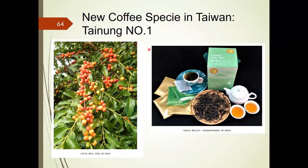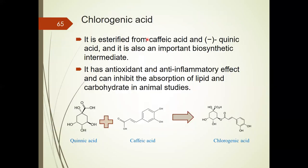CA0H was completely identified as a new coffee species in Taiwan and named Tainone No. 1. Chlorogenic acid is esterified from caffeic acid and quinic acid, which is an important biosynthetic intermediate. Chlorogenic acid has anti-oxidant and anti-inflammation effects, and can inhibit the absorption of lipid and carbohydrate in animal studies.